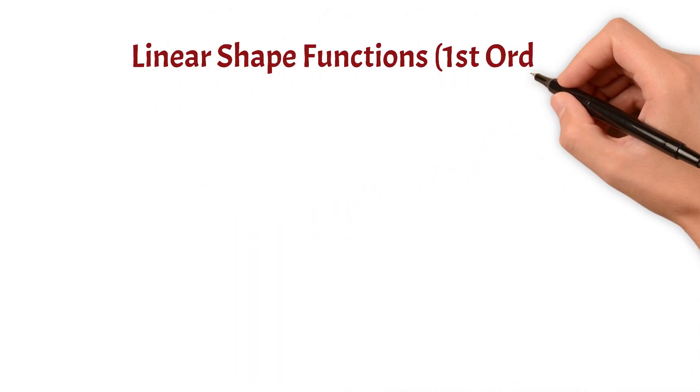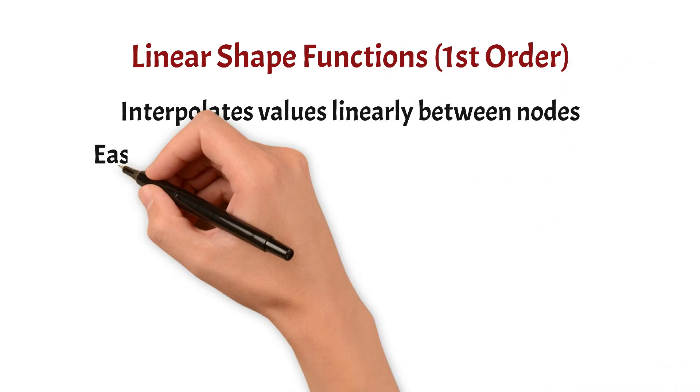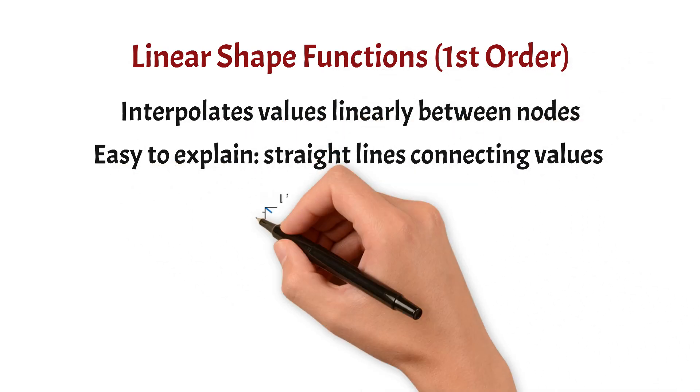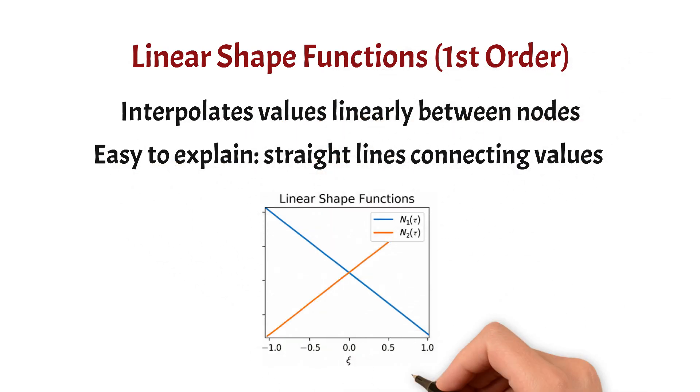So, let's start with the simplest case. Linear shape functions are also called as first order shape functions. These functions interpolate values linearly between the nodes of an element. In other words, if you connect the nodal values with a straight line, that's your shape function. They're easy to understand, quick to compute.